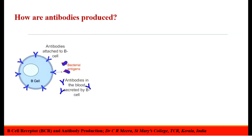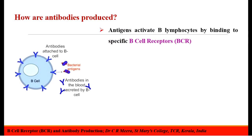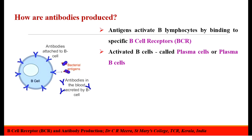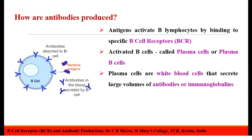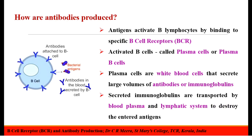How are antibodies produced? In order to produce antibodies, first the antigen should activate the B-lymphocytes, and this activation is by binding with specific receptors on the B-cells which are known as the B-cell receptors. Activated B-cells are called the plasma cells or the plasma B-cells. Plasma cells are the white blood cells that could secrete large volumes of antibodies or immunoglobulins, which are transported by blood plasma and lymphatic system to destroy the entered antigen.